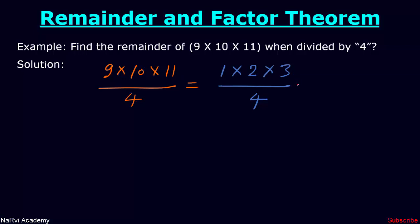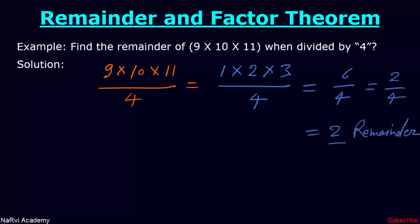Let's calculate the final remainder. 1 × 2 × 3 = 6, divided by 4. If we divide 6 by 4, 4 ones are 4, so 2 will be the remainder.